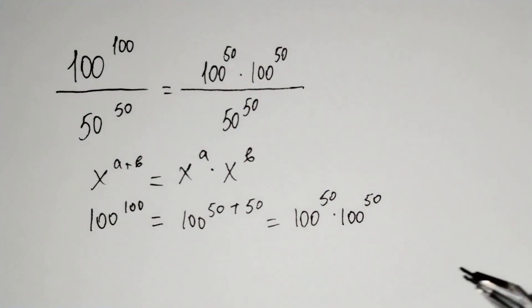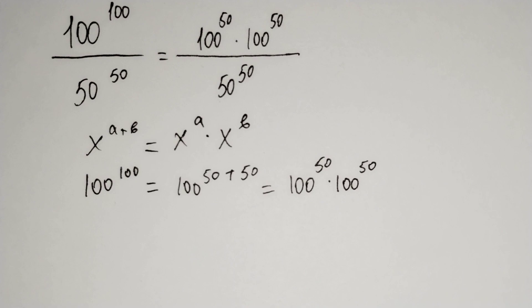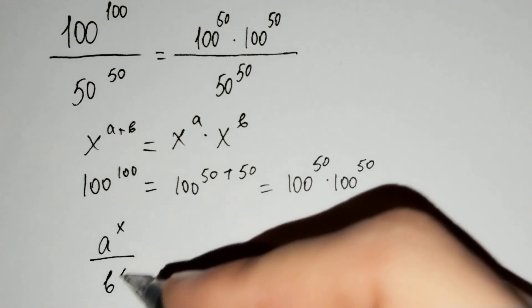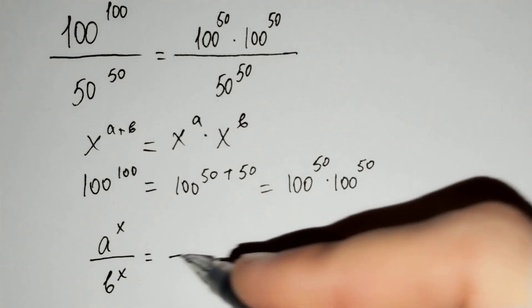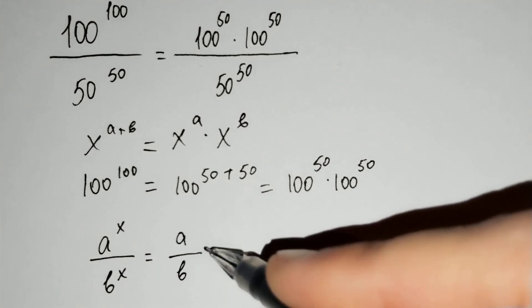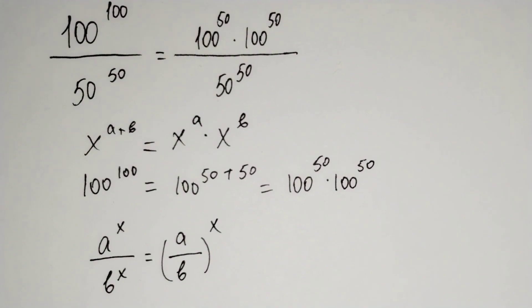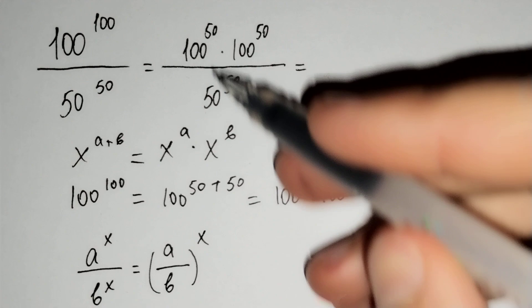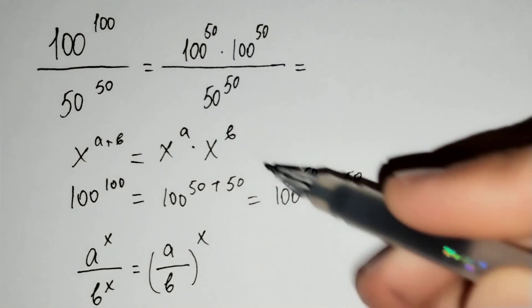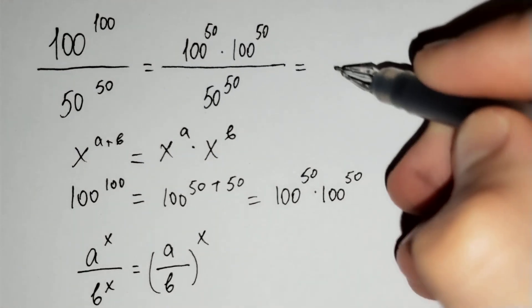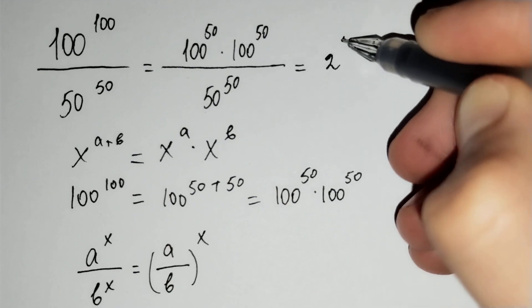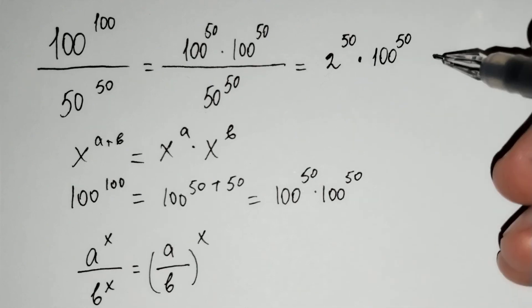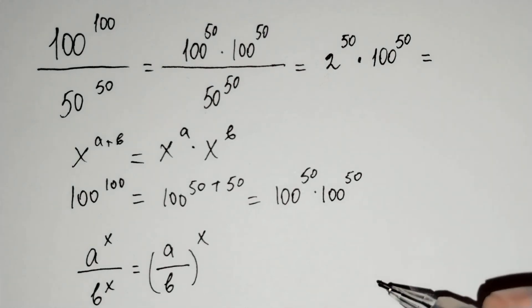And you also know that a power x over b power x equals to a over b power x. And here 100 power 50 over 50 power 50 equals to 2 power 50 times 100 power 50.